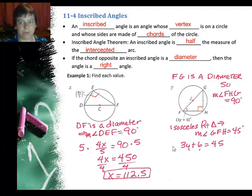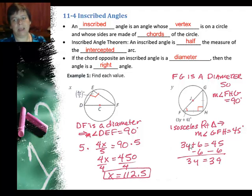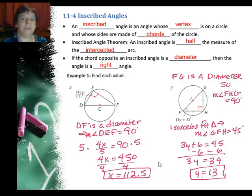First subtract 6 from both sides, and I get 3Y equals 39. And then I can divide both sides by 3, and I will get Y equals 13.